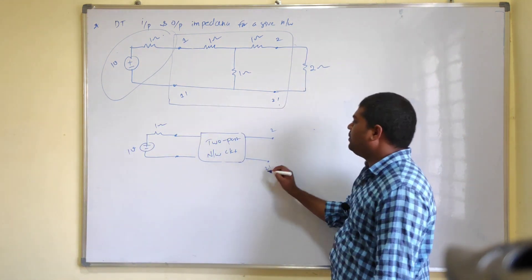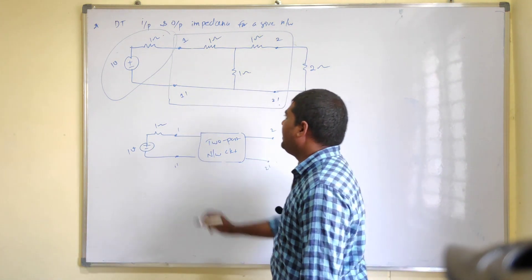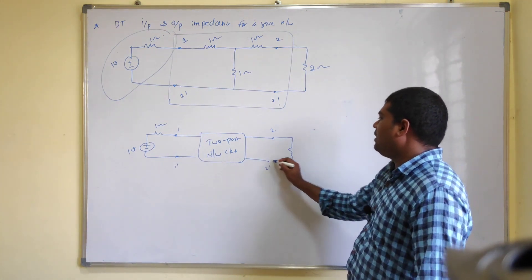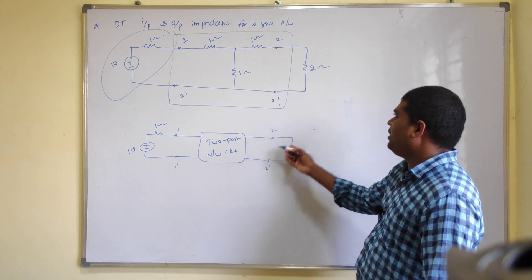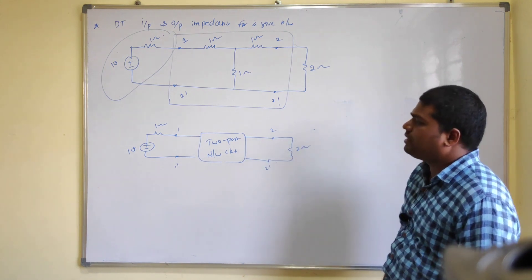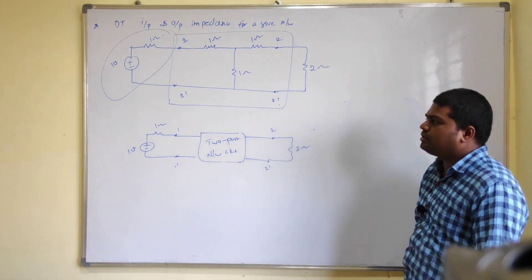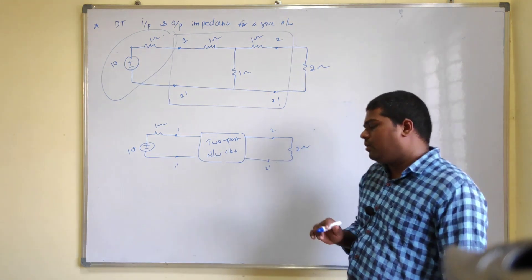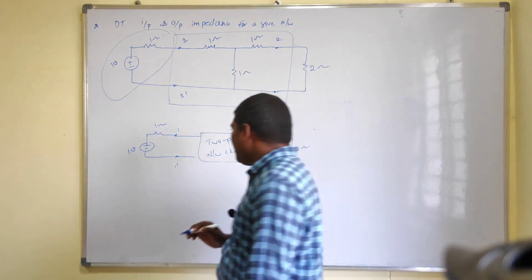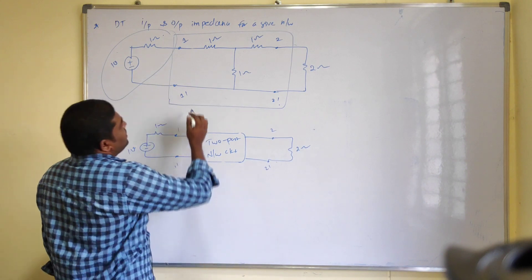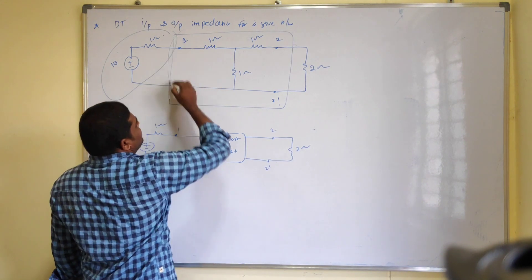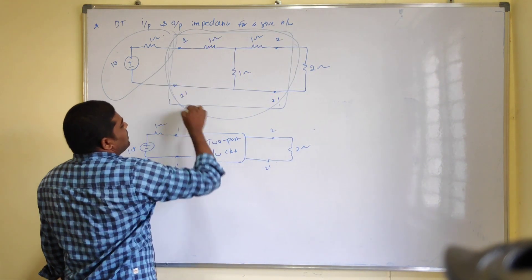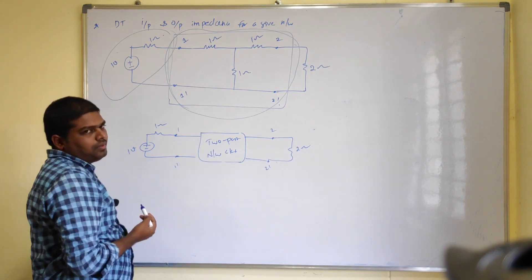This is two and two dash, this is one and one dash. For this, we need to connect a two-ohm load resistance. So this is your circuit diagram. Now, this entire portion is nothing but our two-port network circuit.